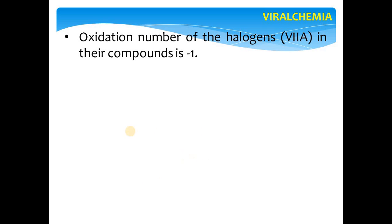The oxidation number of halogens in their compounds is −1. Fluorine is always −1 and has no other option. Other halogens like chlorine, bromine, and iodine can go up to +7, but commonly we take them as −1.